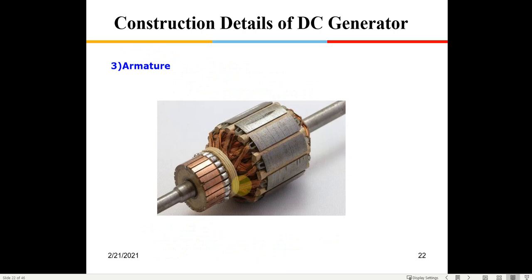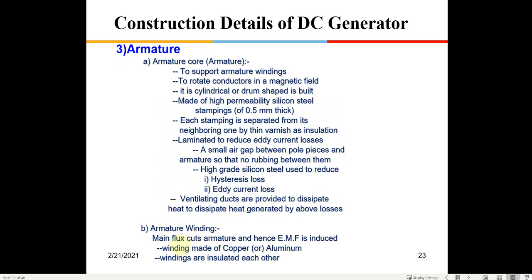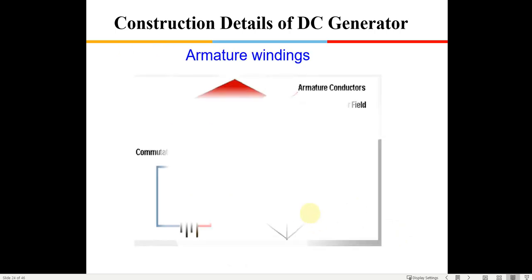The armature windings are made of copper or aluminum. EMF is induced in these windings, which are insulated from each other and coated with varnish. When the varnish coating degrades, short circuit currents can occur in the DC generator. Insulation checks must be done periodically between the winding and the body. If the varnish fails, the coil must be removed and rewound with properly varnish-coated aluminum or copper wire.